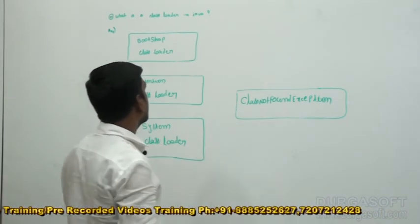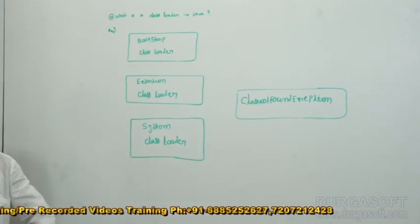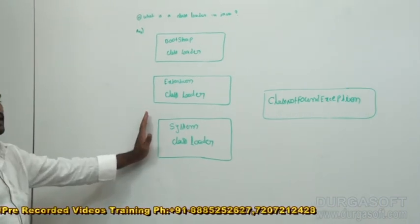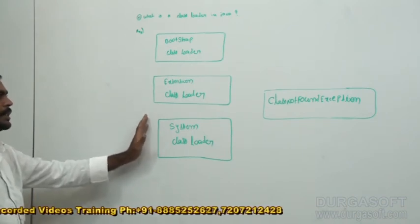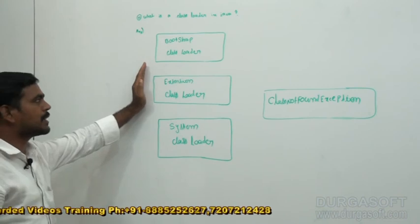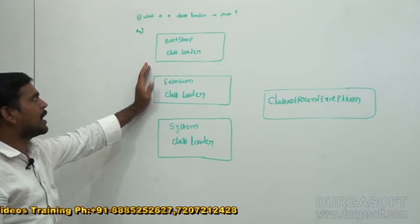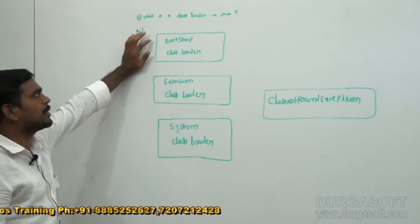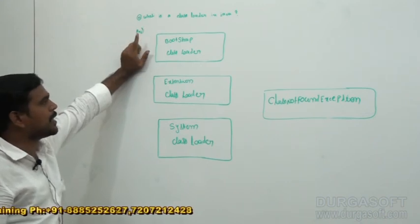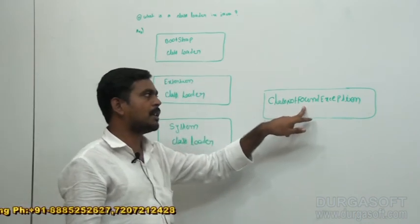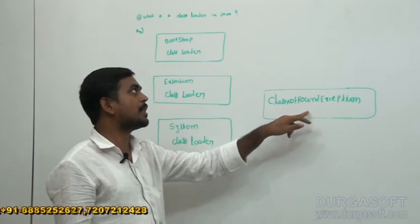So the answer is: whenever we are running any Java class, first the JVM is going to be looking at the system class loader. If it is available, that class is going to run. If it does not exist inside the system class loader, then it looks inside the extension class loader, which comes along with the JRE. If it is not available there either, then it looks at the bootstrap class loader. If it is also not available, then automatically JVM throws an exception called ClassNotFoundException. This is the answer for this question.